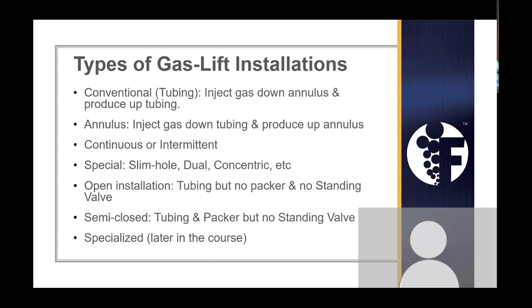When dealing with 3,000 to 8,000 barrels of fluid constrained to five-and-a-half-inch casing with two-and-seven-eighths tubing, you might look at annular flow gas lift — actually injecting down the tubing and flowing up the casing. You can also do applications with both casing and tubing flow valves on the same tubing string. The choice of conventional versus annular flow really depends on the fluid rates the operator expects to see.